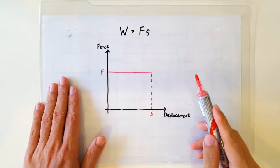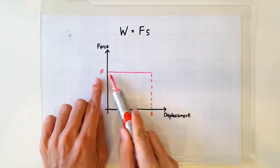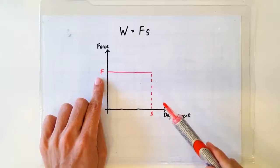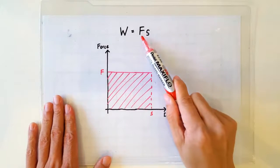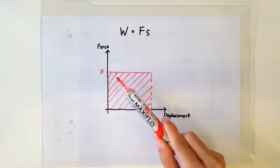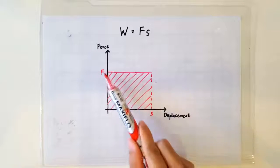If you bother to plot the graph, then you get a horizontal line because F is a constant force. And you realize that F times S is equivalent to the area under the Fs graph.